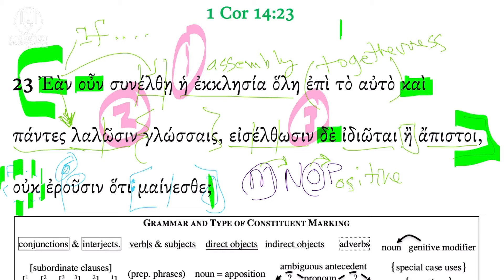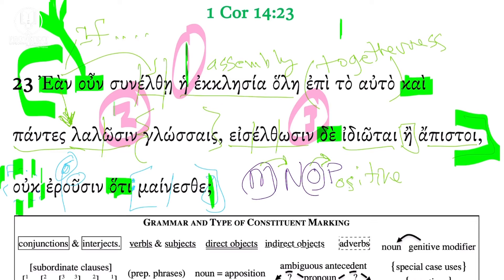This is quite a significant verse. Notice the oun marks this as a distinctive development in the argument, drawing a further inference. He's basically laying out a scenario with three steps involving tongue speaking, and the very unfavorable observation by pagan unbelievers or outsiders that indeed you're in a religious frenzy. In the next two verses, we'll see a positive example of prophesying. Hope this is helpful, and look forward to having you listen and watch next time.